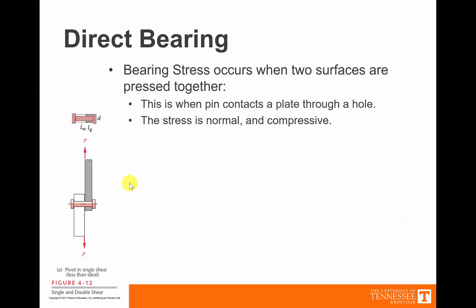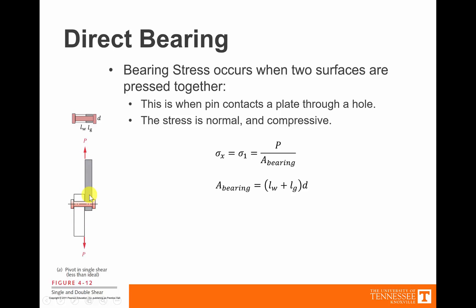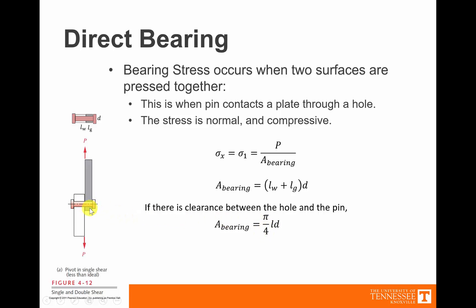For bearing stress — which is what happens when you pin something together, the most common case — it's compressive. We're trying to squash this piece of material. Here are two pieces with a pin running through. The formula is the force divided by the bearing area. The bearing area is the diameter of the pin multiplied by the length of the pin, which in this case is the combined length W and G. If there is a clearance between the hole and the pin — if it's not a tight fit — you also need to multiply this equation by π/4.